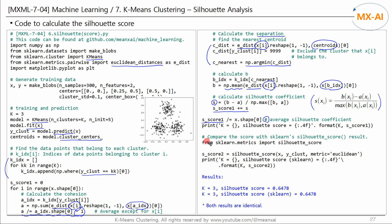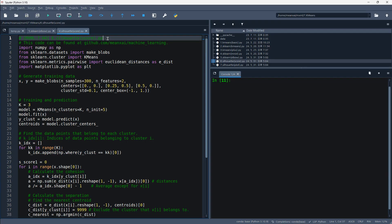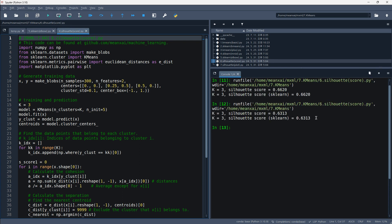Next, let's calculate this using scikit-learn's silhouette score class. Calculate the silhouette score using the data x and cluster numbers, with Euclidean distance as the metric. Let's check the results — both results are the same: 0.6478. Our computational results and scikit-learn's results are in good agreement.